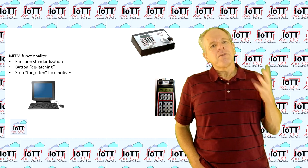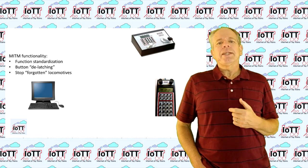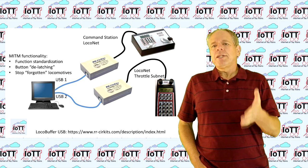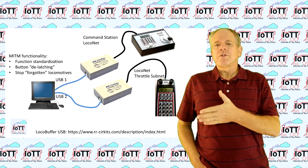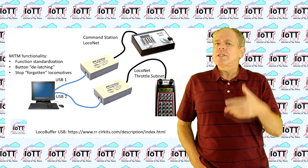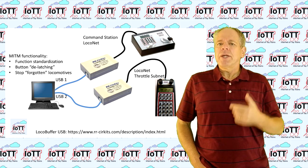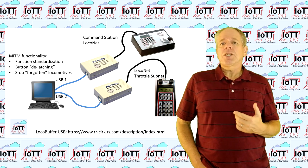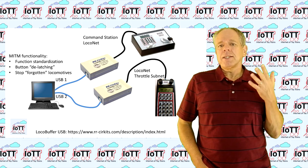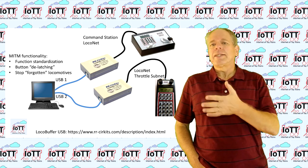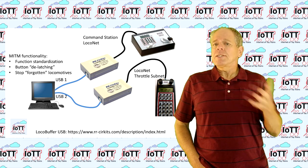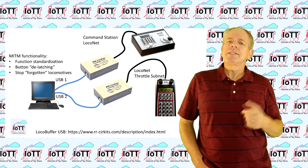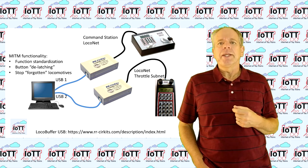The way they are doing it is placing the middleman on a computer between two loco buffers — in other words, a very fast connection between the command station network and the subnet with almost zero latency, which is the key to make it work as we will see in just a minute.